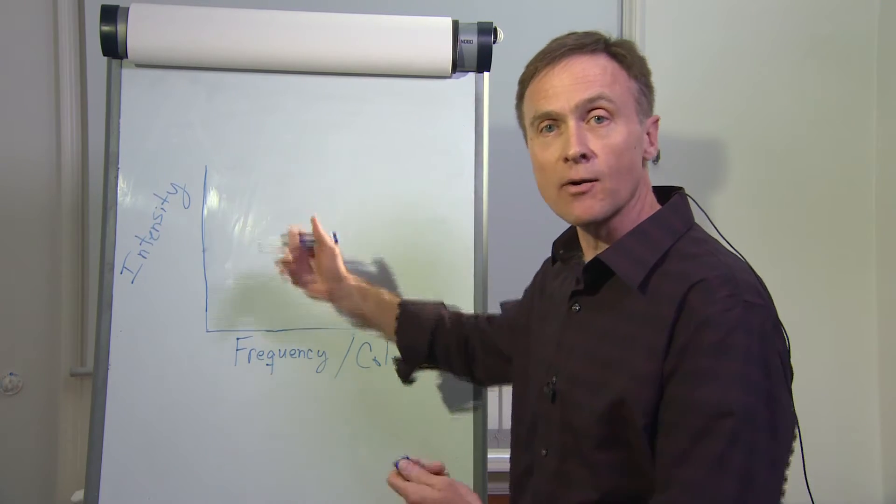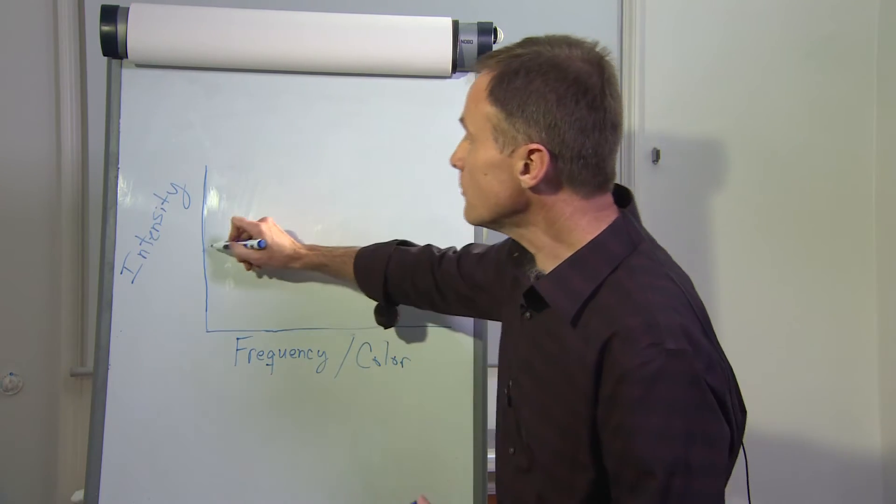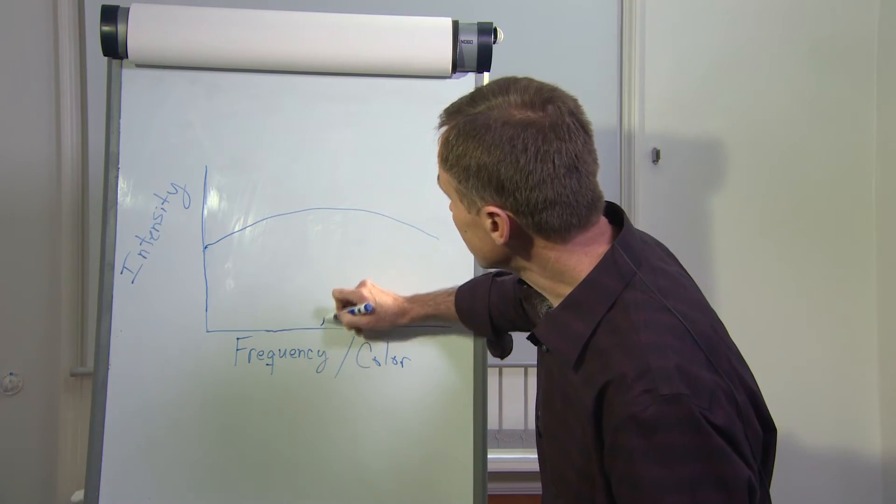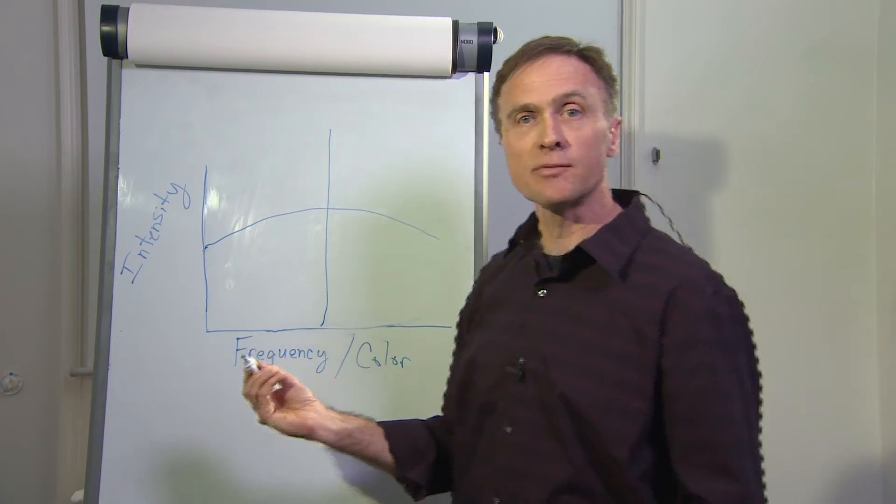So if we talk about the spectrum coming out, let's talk about a light bulb. It puts out a broad spectrum, lots of frequencies or colors, but a laser puts out just a very narrow range of optical frequencies.